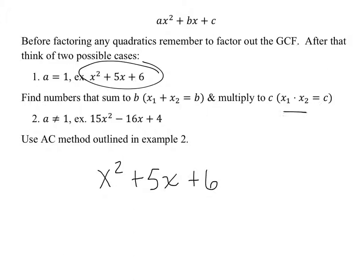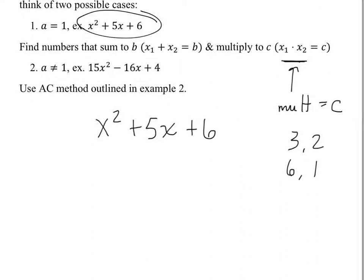We need to think about what two numbers multiply to give me C. So what numbers multiply to give me six? Give me all the numbers that multiply to six — integer values only. Don't forget the negatives; the negatives come up a lot. We'll figure out which one to pick when we look at the value of B. The value of B in this problem is five.